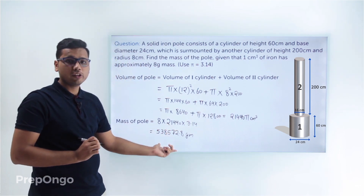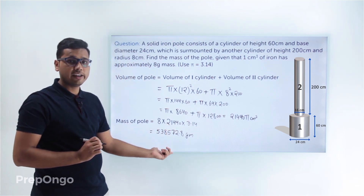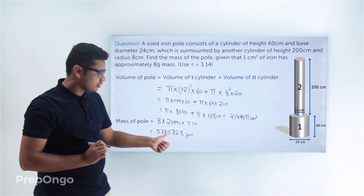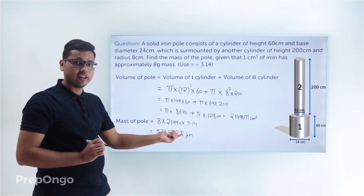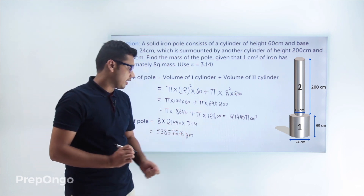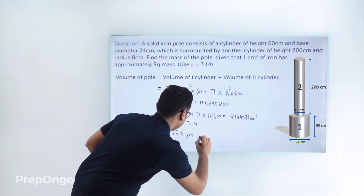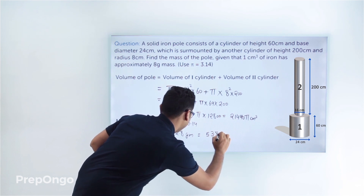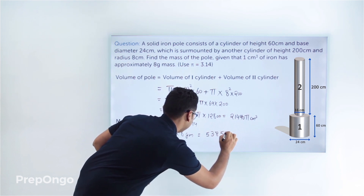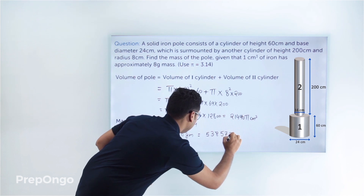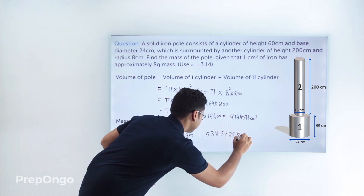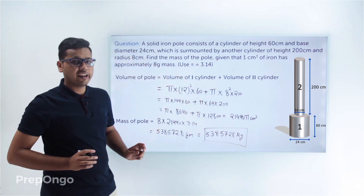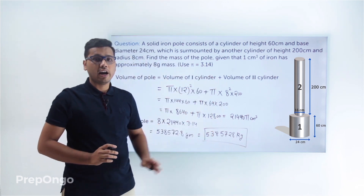We can convert this into kilograms by dividing by 1000, shifting the decimal 3 places. This gives 5338.5728 kg, which is the total mass of the given iron pole.